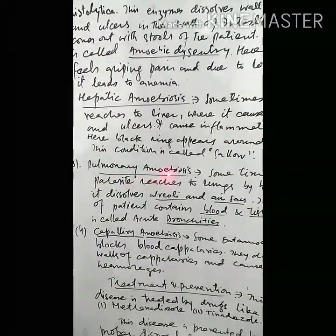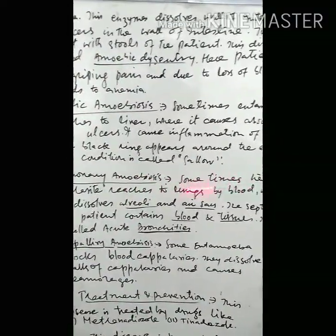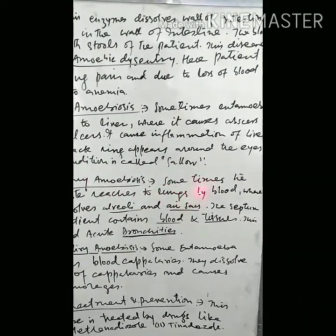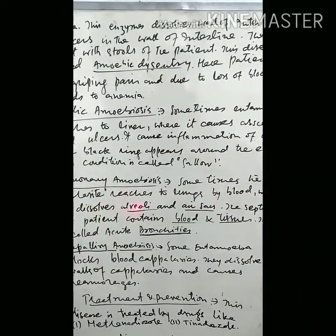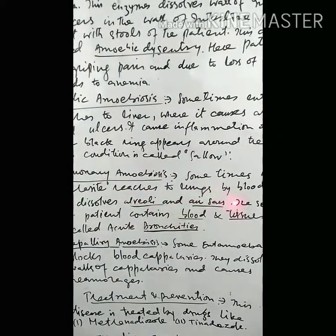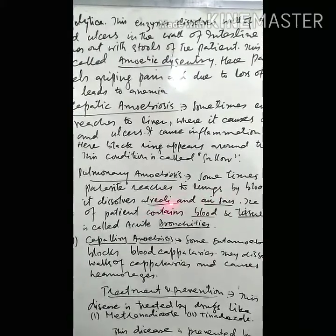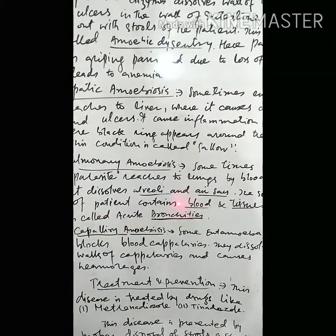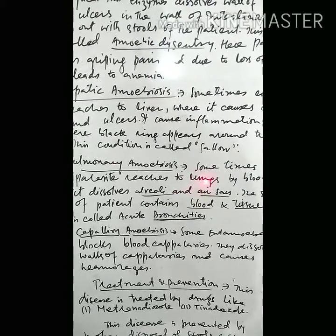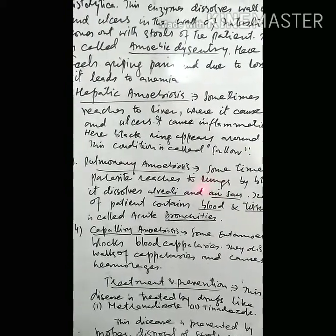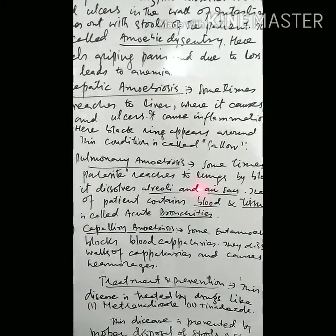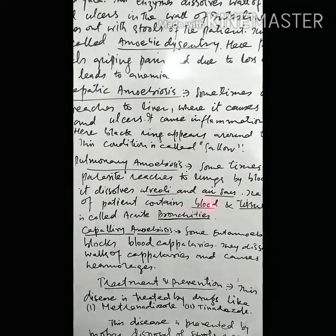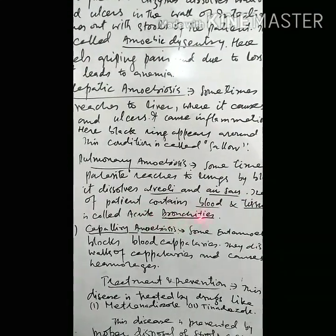Third is pulmonary amoebiasis. Sometimes Entamoeba histolytica reaches the lungs through blood, where it dissolves the alveoli and air sacs. It ruptures the alveoli and bleeding occurs there. This blood comes out through the sputum of the patient, which contains blood and tissue. This is called acute bronchitis.